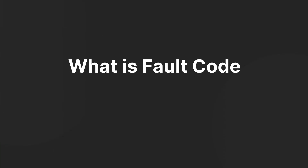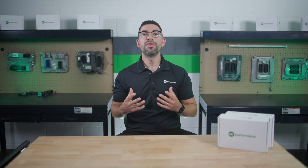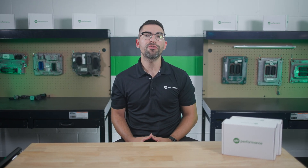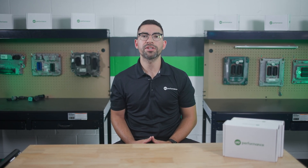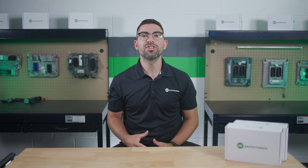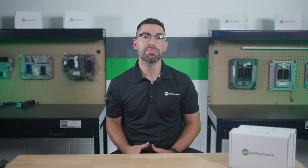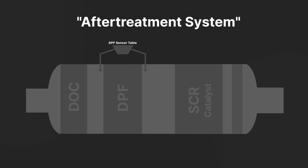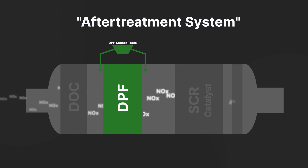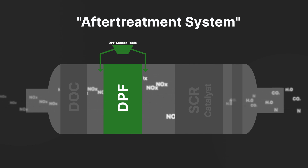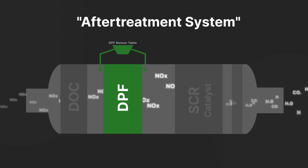Fault code SPN5502 signals that the aftertreatment system's temperatures are too low for proper regeneration. This leads to reduced engine performance and potential long-term damage if not addressed promptly. The aftertreatment system monitors the soot load in the diesel particulate filter. Under normal conditions, the filter is self-cleaning, converting soot into carbon dioxide, nitrogen, and water.